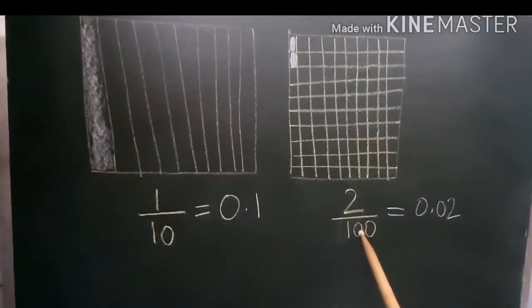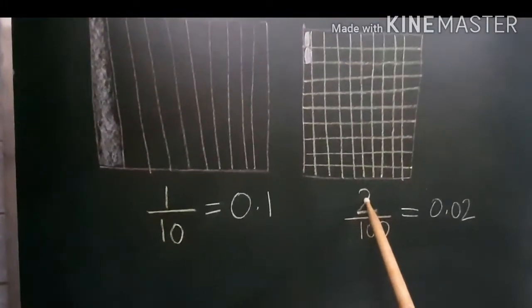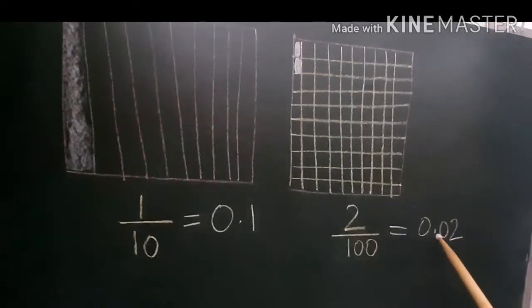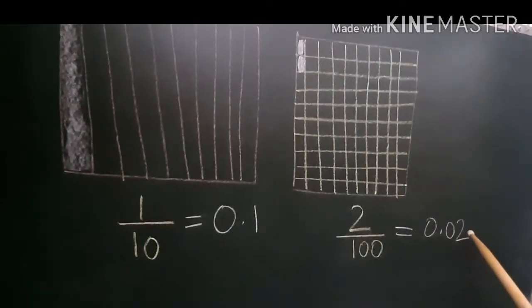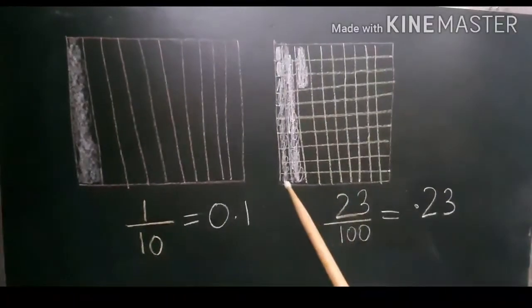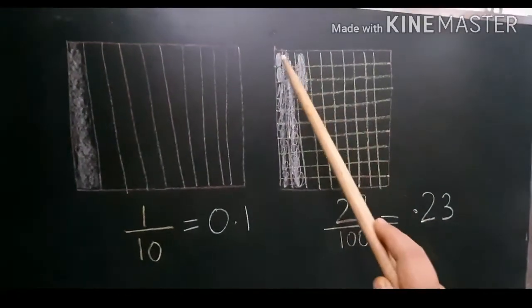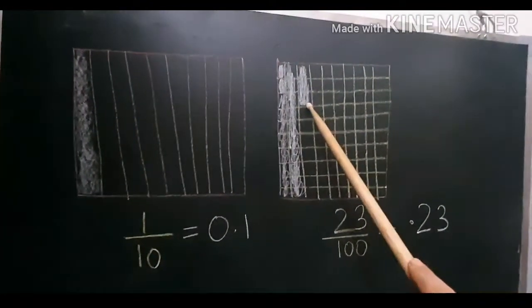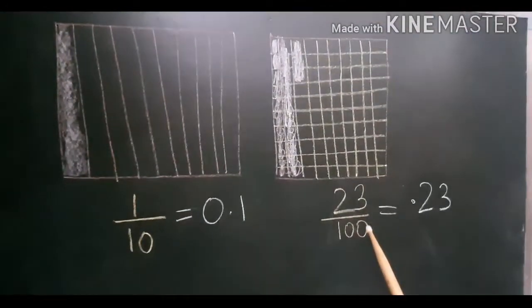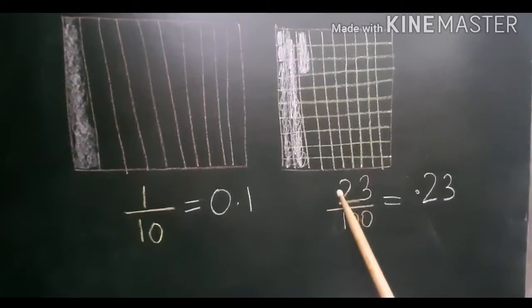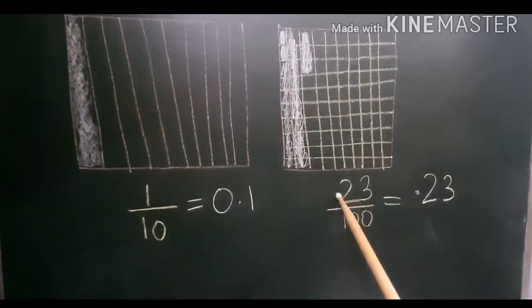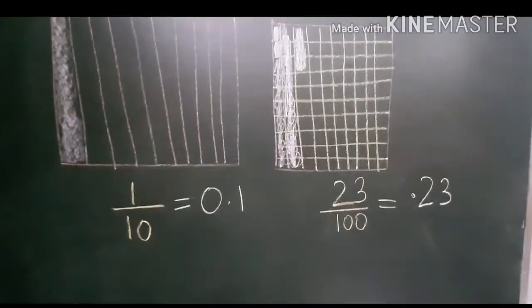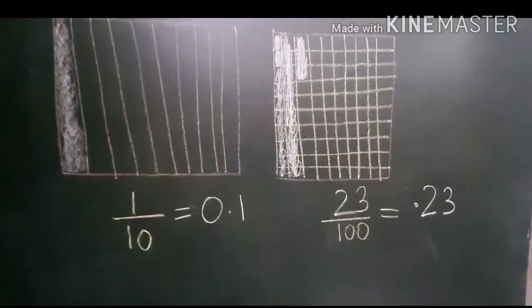For 2 by 100, counting the zeros: there are two zeros, and the numerator is a single digit 2. So I need two digits, placing a zero in front of 2 and then the decimal, giving 0.02. Now with 23 boxes shaded out of 100, the fraction is 23 by 100. Counting two zeros, I place the decimal sign to get 0.23.